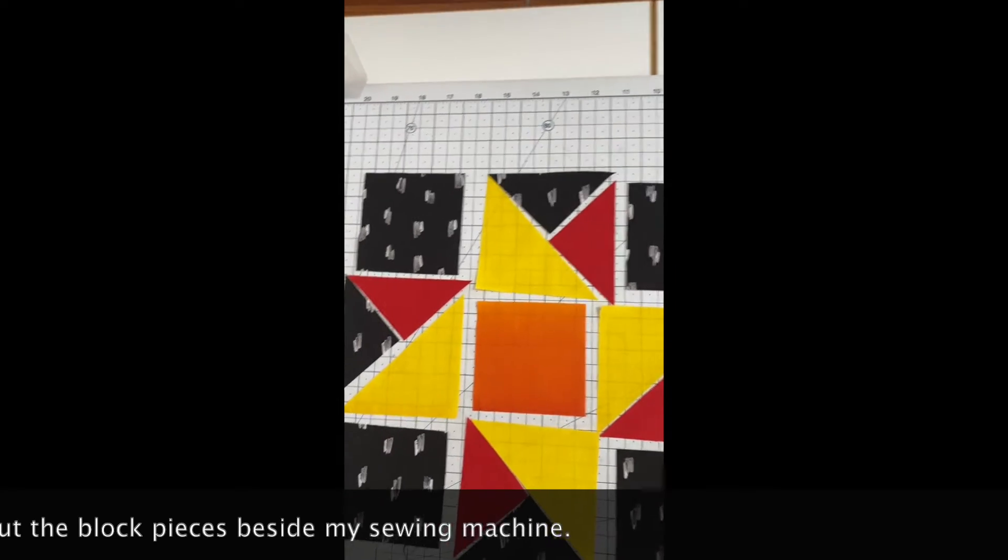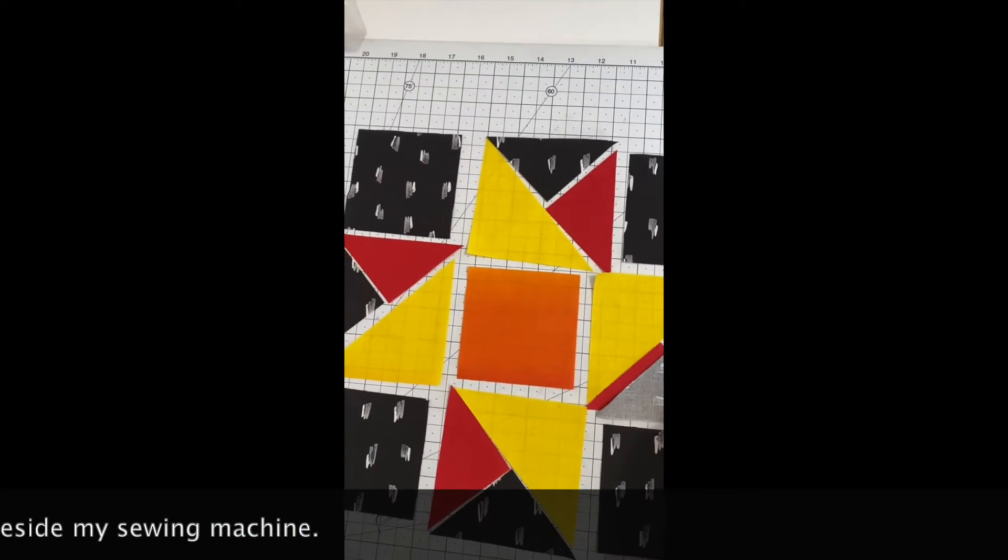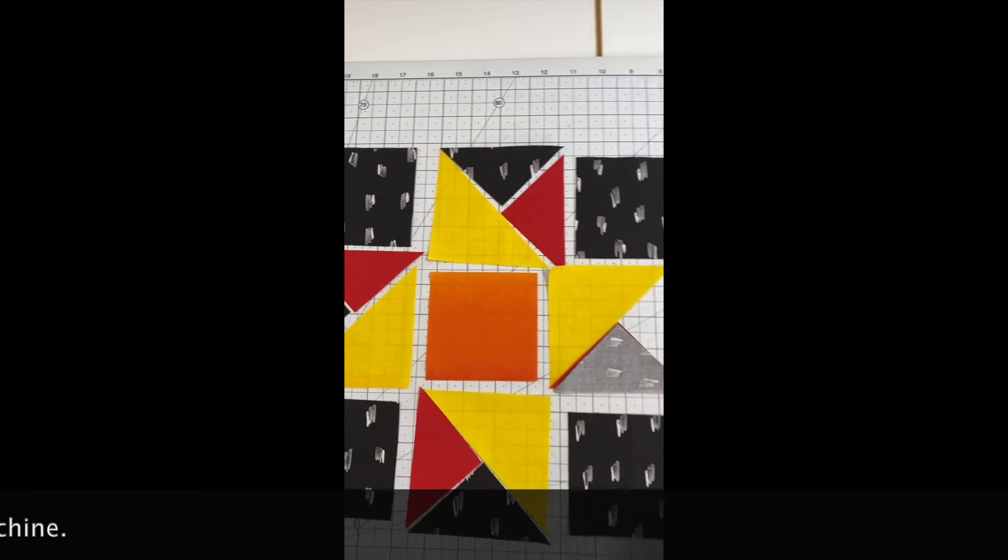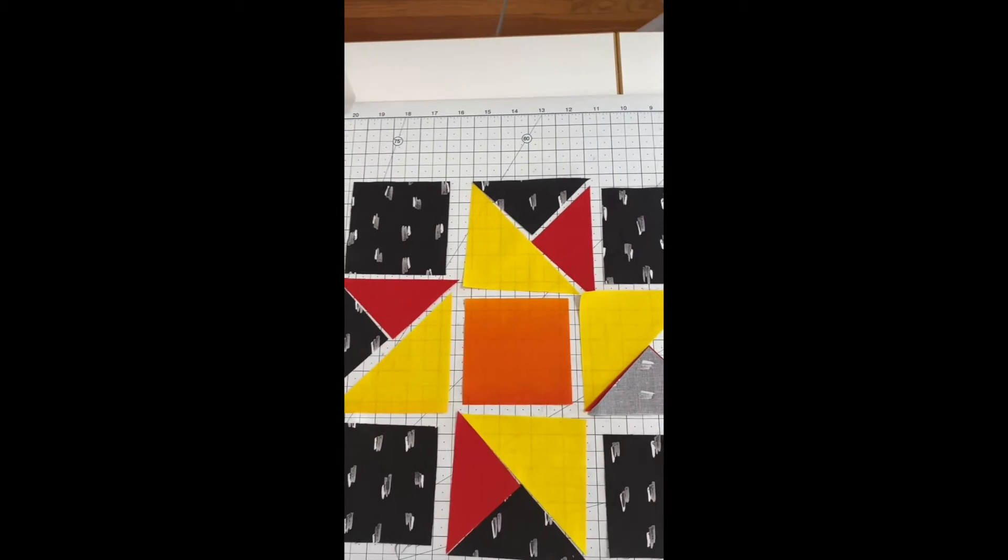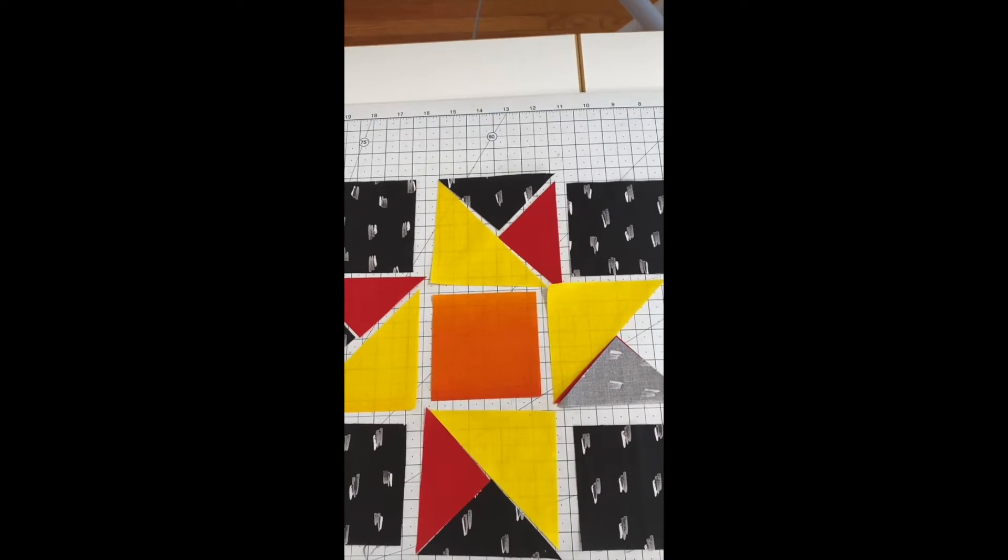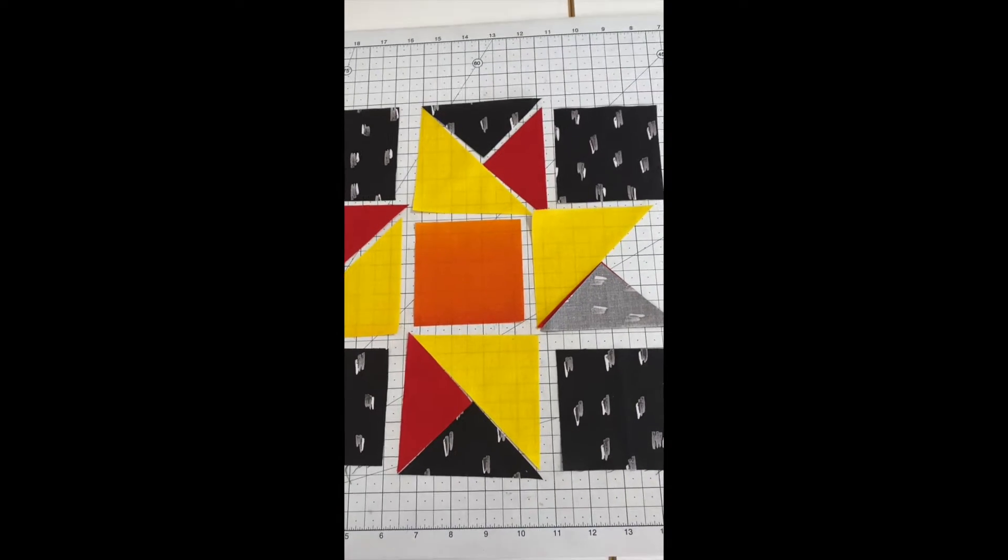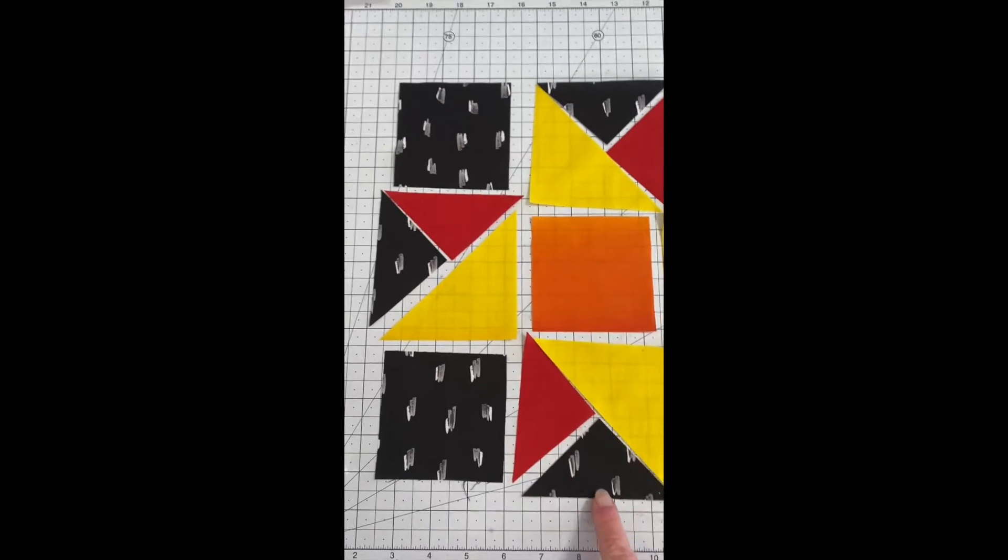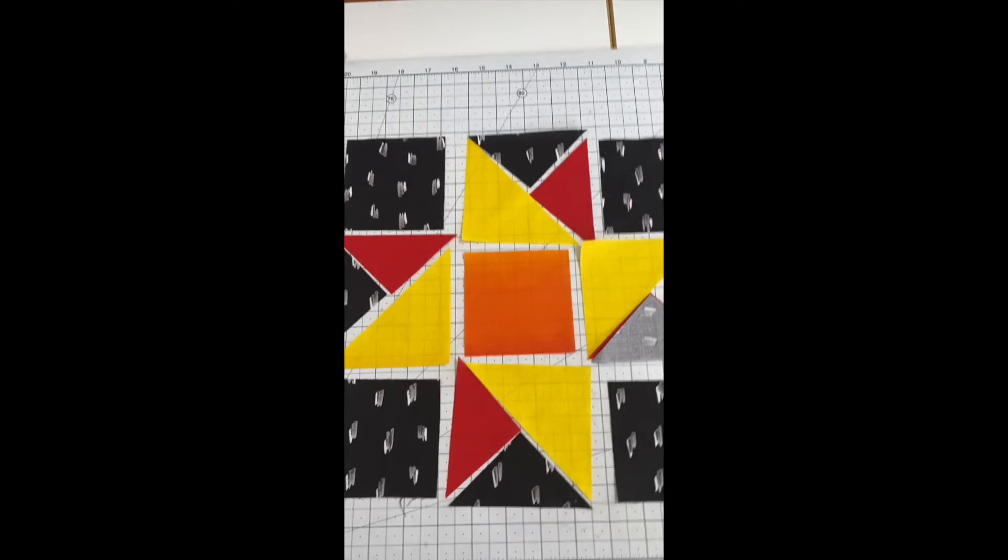And then I'm going to flip the black over the red and line them up. And then I'm going to sew this seam right there. Then I'm going to go down here and do the same thing and leave everybody else just sitting there so that I don't get black and red in the wrong position. I'm also making sure, because it matters to me, that these little lines are going up and down. I don't think I did that on the first block.